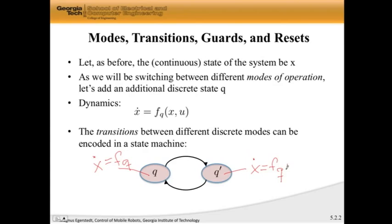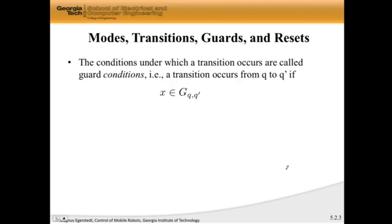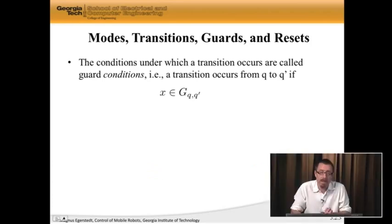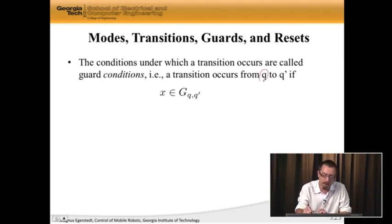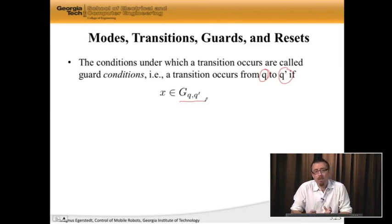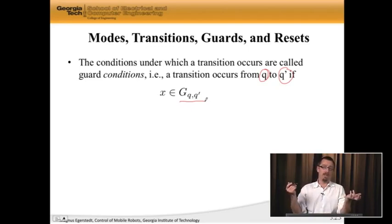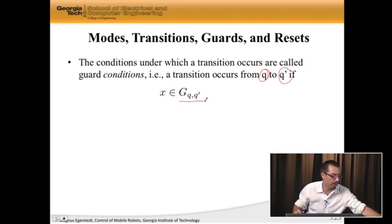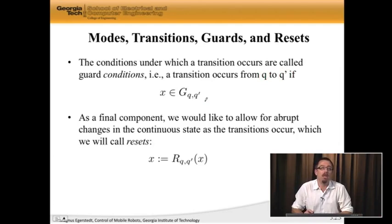What we need to understand is, when do we actually make these jumps? For that we need something called a guard, and the guard is something that checks whether or not you should jump. The guard condition tells you when it is time to jump. Let's say that I am in mode q, and I want to jump to mode q prime. If x belongs to this guard, for instance, if my RPM is above 3000, then I'm going to switch. This is a guard condition that encodes when it is time to jump.